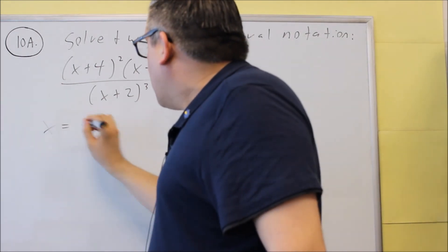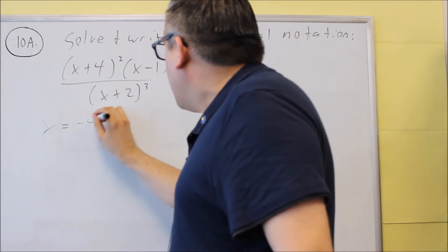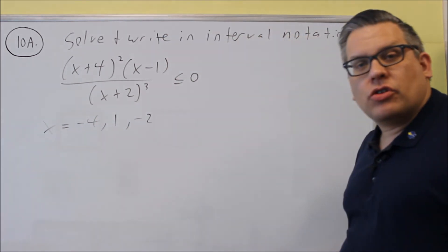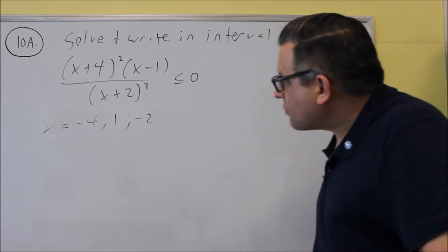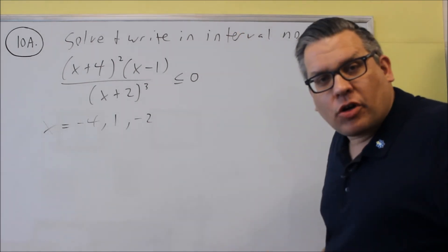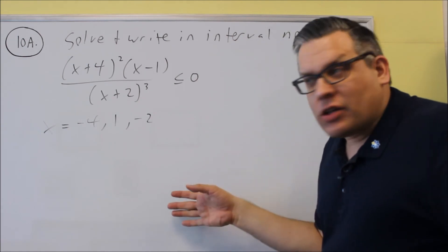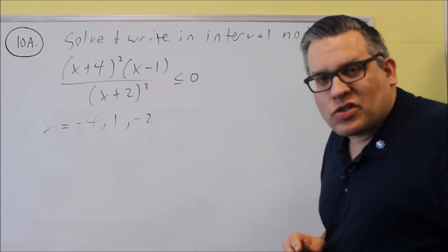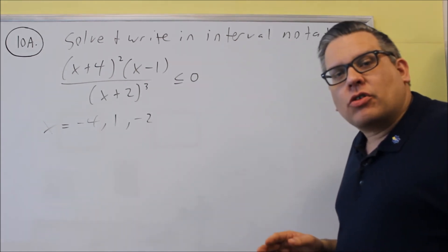This way you'll get the numbers that go on your number line. So for this we get negative four, one, and negative two will be those numbers. So I'm going to do one problem. This problem here I'm going to go ahead and do for you with the table method and then for 10B, I'll do the same thing with a number line instead so you can see the two different ways that you can do it.